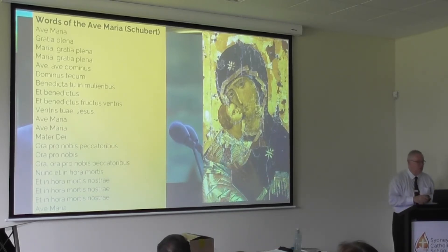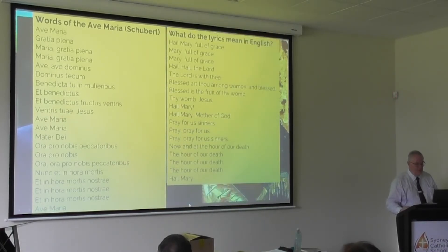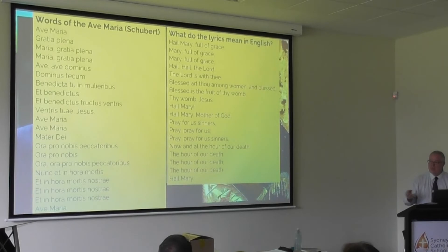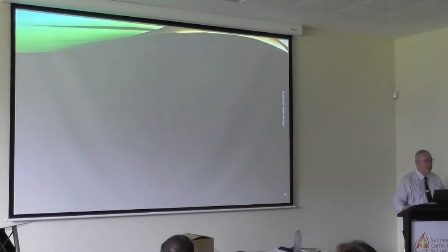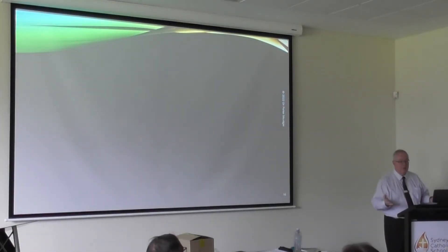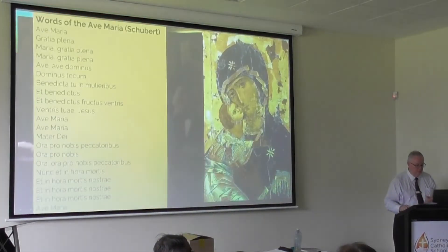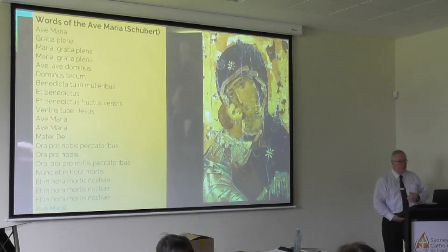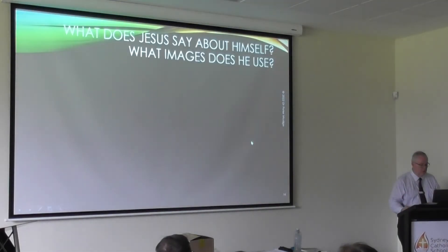Et in hora mortis nostrae — at the hour of our death. Why do they repeat that three times? The English is there as well. Then maybe go back to the Gospel account. It's about interweaving the different levels of meaning: when did it happen, then go back, play it, and then go back to the icon. What does all this say about the icon and the spirituality of the icon? Then start reading about that, read about the history. There are different dimensions you can go into.